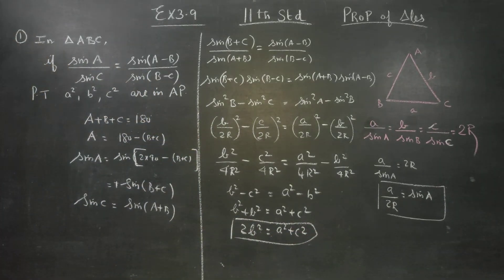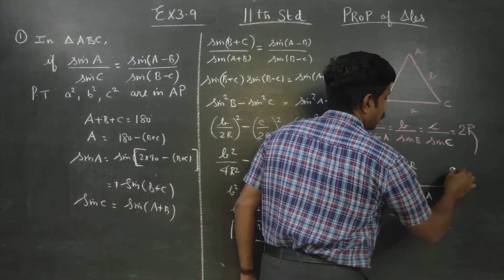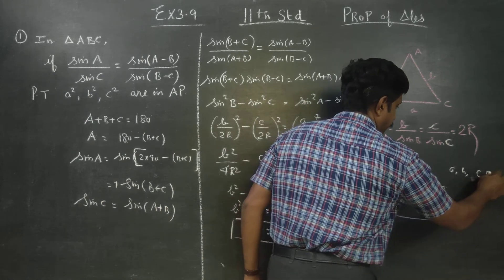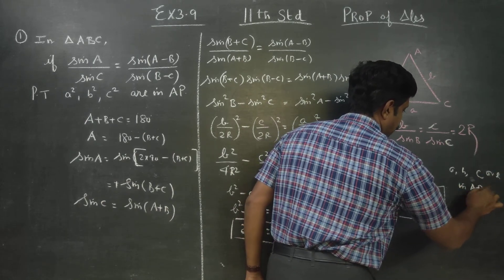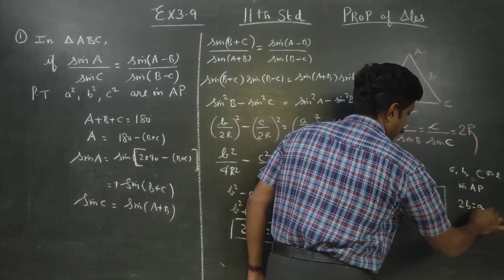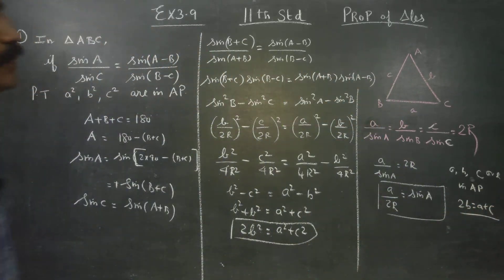From standard 10 arithmetic progression, if a, b, c are in AP, then 2b = a + c is the formula. Similarly, if a², b², c² are in AP, the condition is 2b² = a² + c².